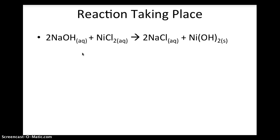So here's the reaction taking place, completely balanced. So you have two sodium hydroxides mixing with one nickel chloride, and as a result you form two sodium chlorides and one nickel hydroxide.